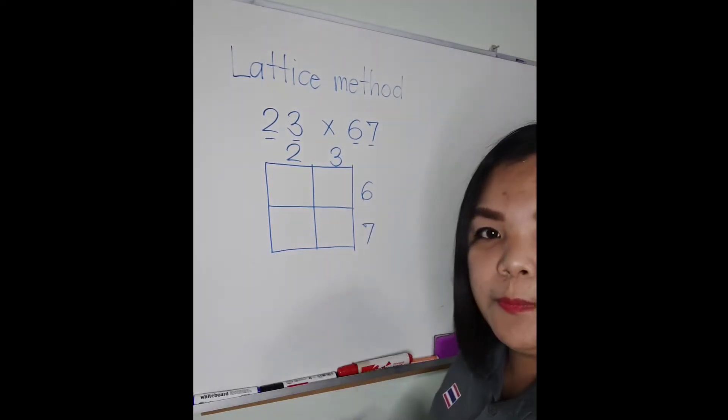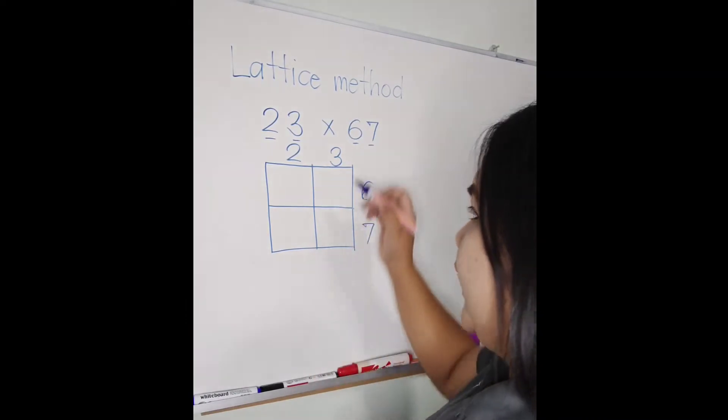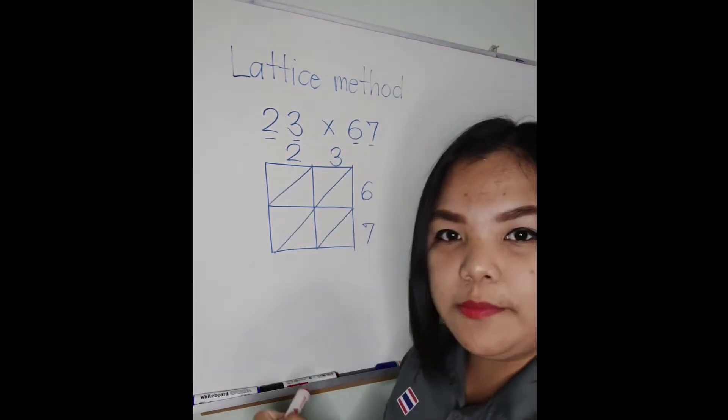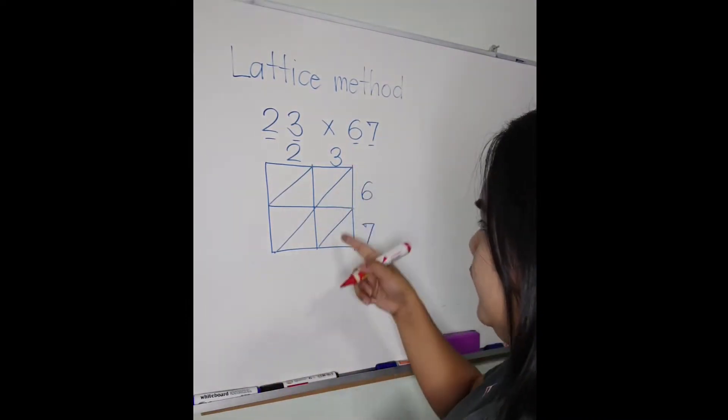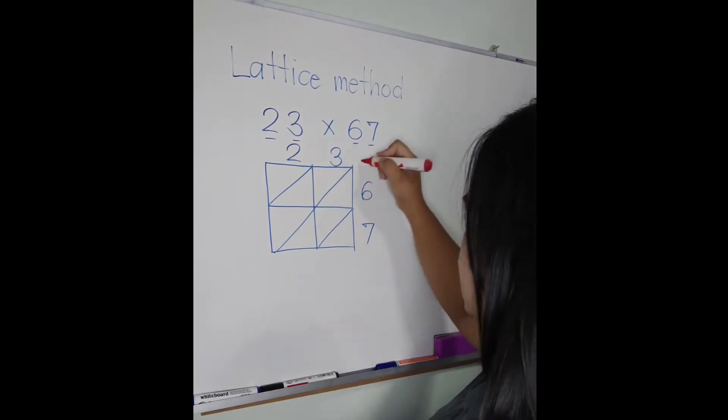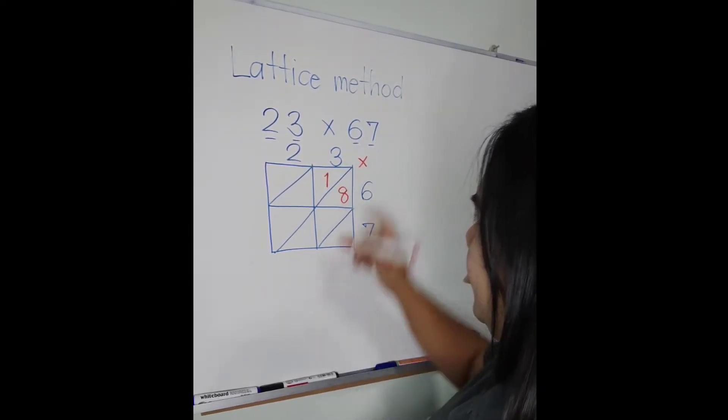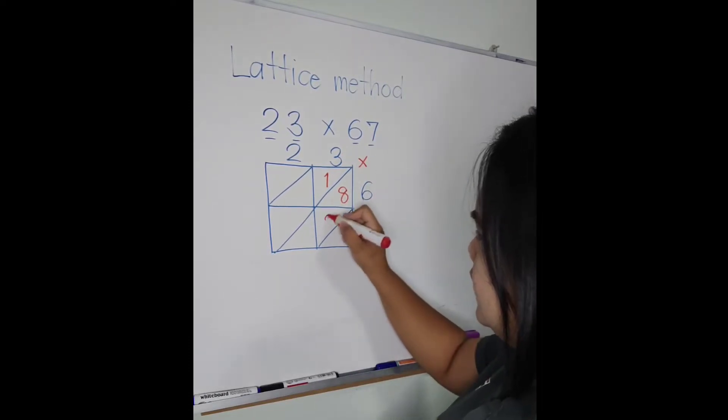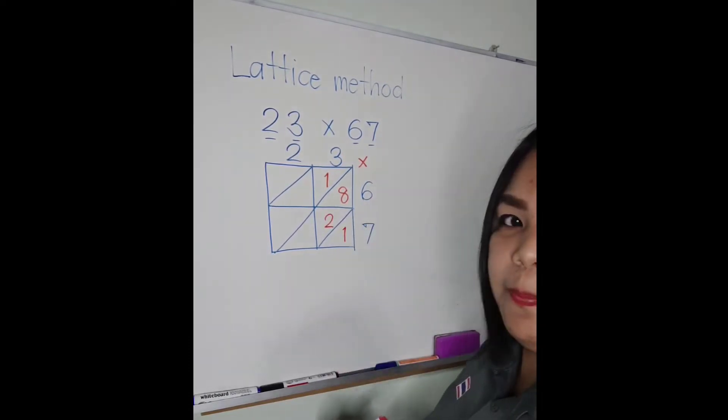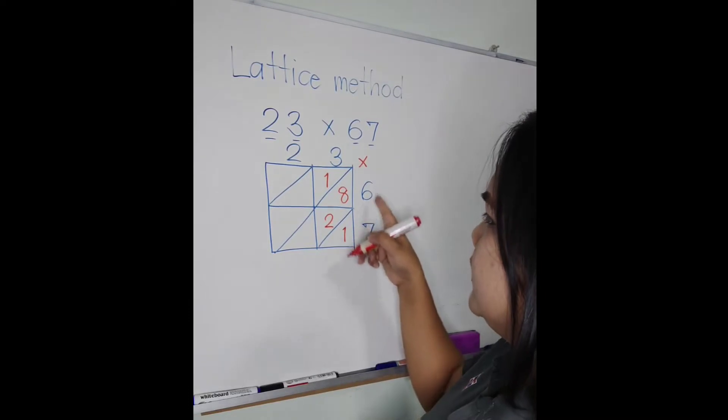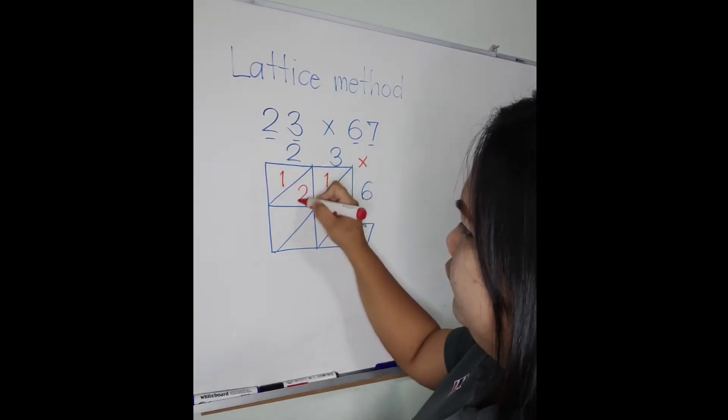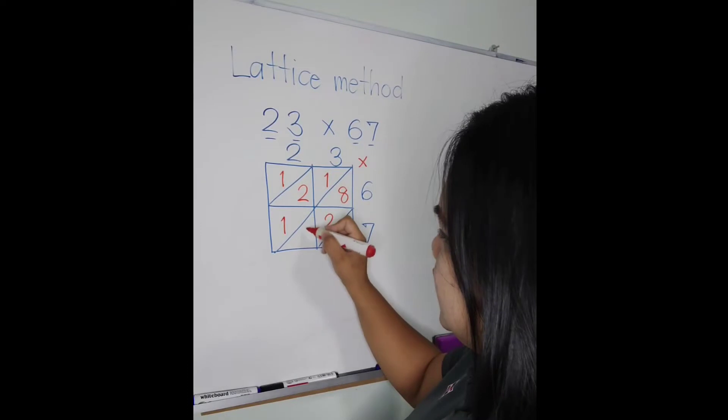Next, make a diagonal line. Next step, multiply the numbers. 3 times 6 is 18, 3 times 7 is 21. 2 times 6 is 12, 2 times 7 is 14.